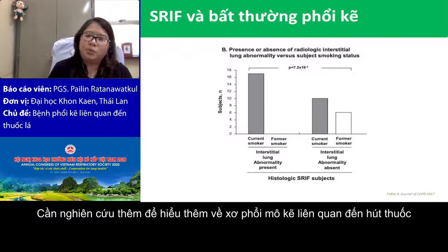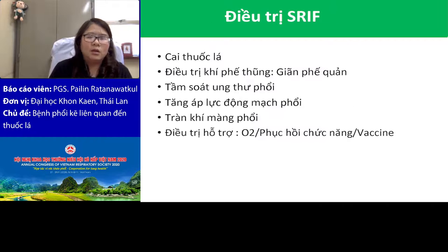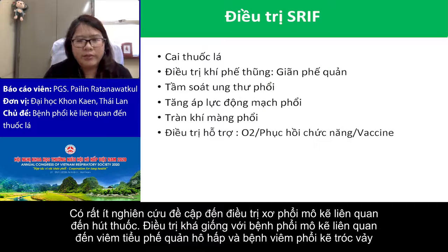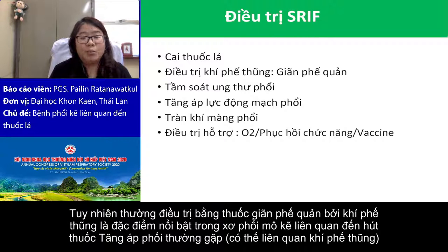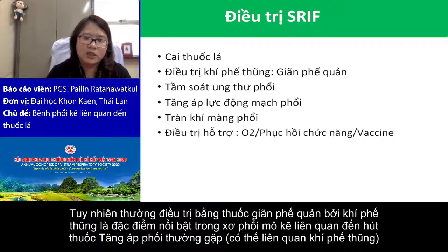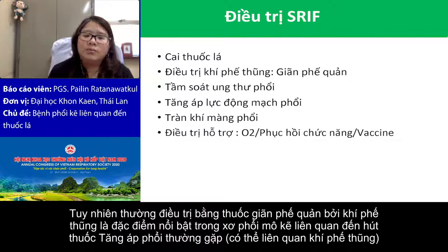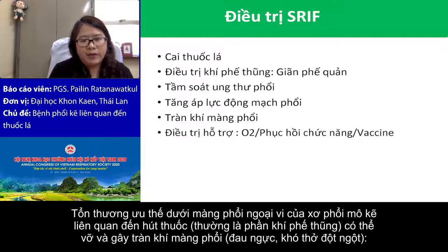More studies are needed to understand more about SRIF. Regarding treatment, very few studies mention SRIF treatment, but I think the treatment is quite similar to RB-ILD and DIP. However, bronchodilators are more important here because emphysema is a prominent feature in SRIF. Don't forget to prescribe bronchodilators. It might also be related to pneumothorax risk because the lesion of SRIF is subpleural predominant and can rupture, causing pneumothorax.